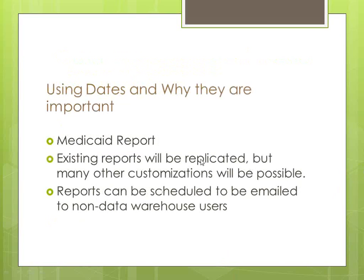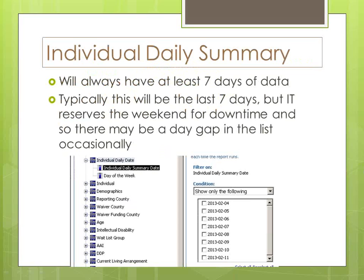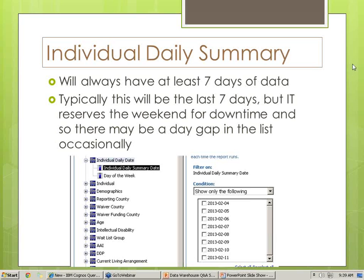The individual daily summary will always have at least seven days of data — right now it looks like eight. Each day you'll have the previous day's data and the days before that. IT does reserve some time on weekends for scheduled downtimes, so occasionally there won't be a Saturday or Sunday snapshot. But in reality the data doesn't change much over weekends, and you'll have all the weekdays in there.